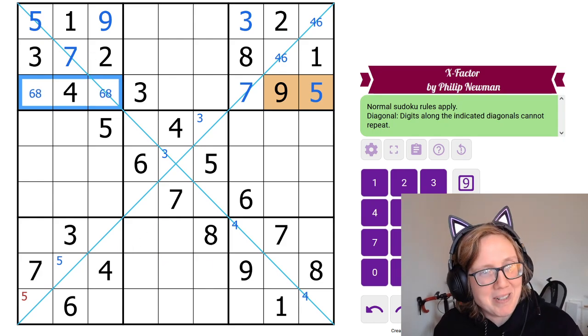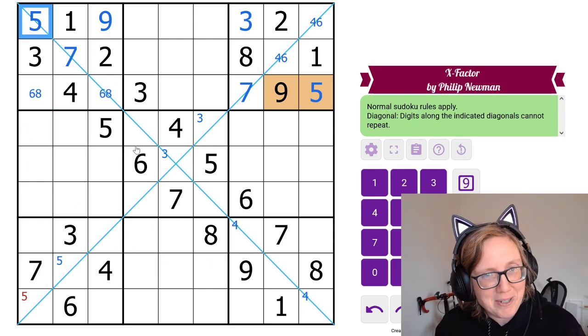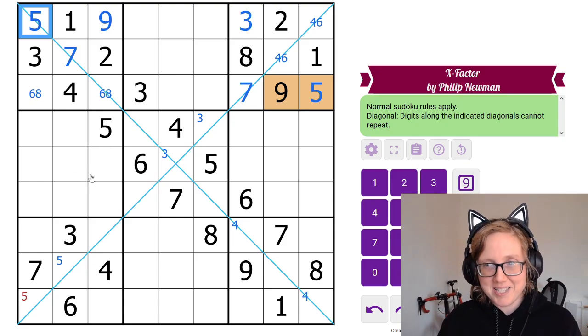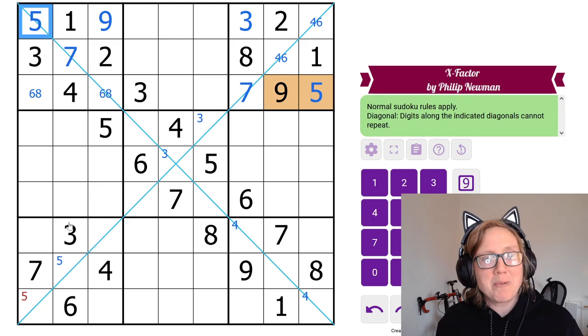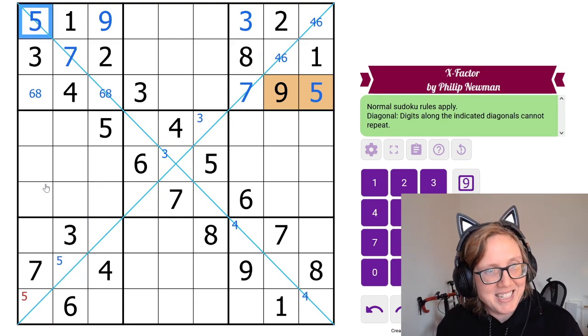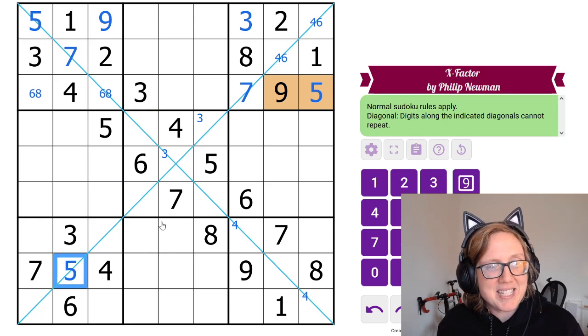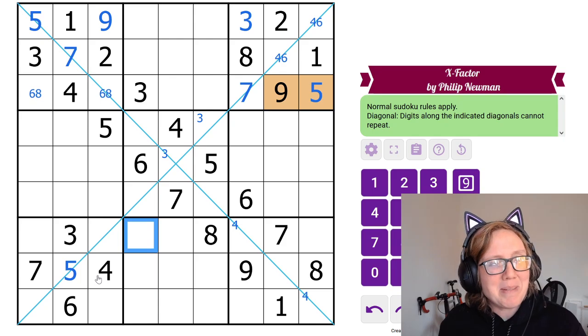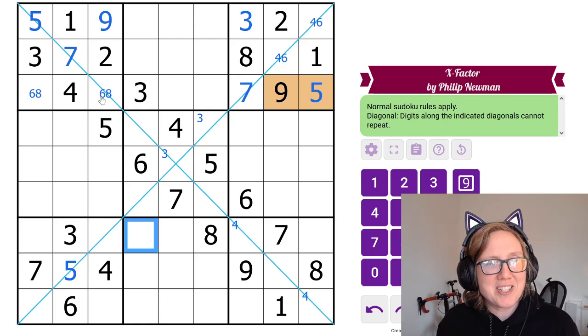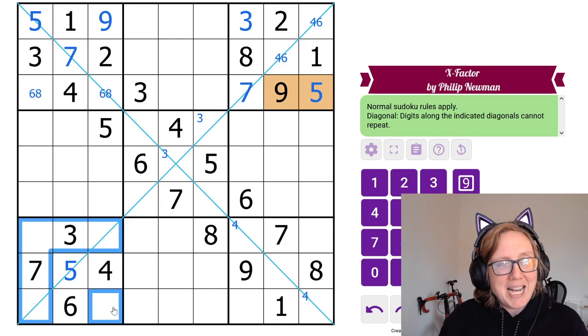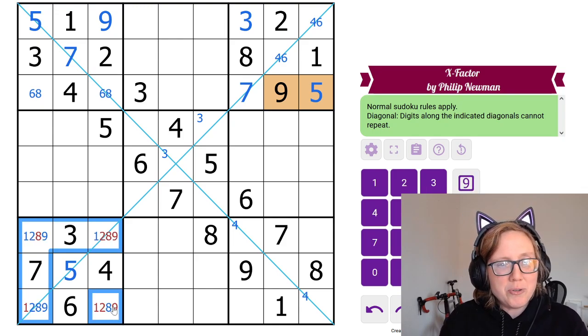And this is the second point where I said, okay, this is very clever because that five I placed is immediately useful by going back to something I did really early, where I pencil marked these two positions for five along this diagonal. So this five rules five out of this cell. And now I've placed a five. And this is interesting because this is kind of an echo of the deductions I made up here. What am I going to do with these cells? Well, they have to contain one, two, eight, and nine. Those are my remaining digits.